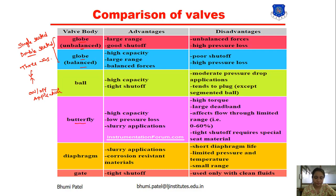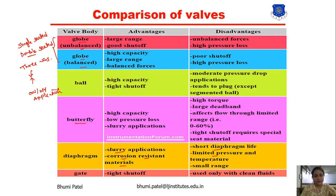The next is the diaphragm valve. We can use a diaphragm instead of ball or butterfly. One advantage is the overall cost of the valve is less. The disadvantage is short diaphragm life — if high pressure is applied, the diaphragm will be damaged compared to butterfly or ball valves. Advantages include suitability for slurry service and corrosion resistance. Disadvantages include short diaphragm life, and limited pressure and temperature range.